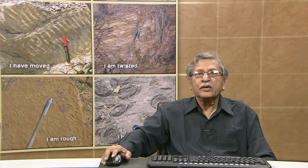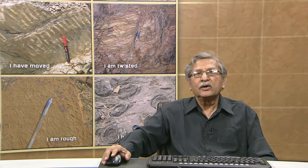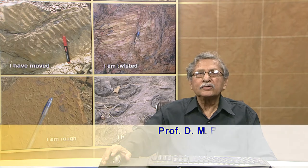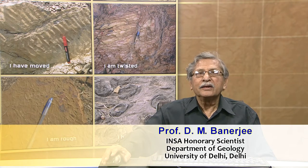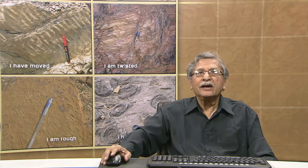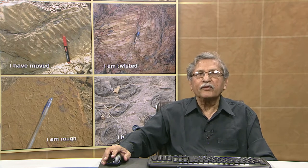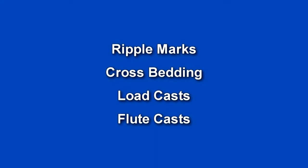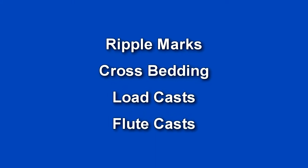Hello Learner. In the previous session, we studied the rock structures which are formed in terrigenous rock — rocks which were formed by destruction of previously formed rocks where physical processes were responsible for their formation. Ripples, cross beds, load casts, flute casts, etcetera were studied.